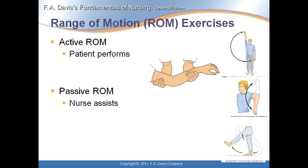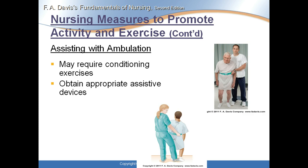Range of motion exercises — active ROM means the patient lifts their arm and performs a full range of motion themselves, while passive ROM means you assist them. Assisting with ambulation may require conditioning exercises first. The longer the patient stays in bed the weaker they get, so get physical therapy working with them as soon as possible. PT will come daily to assess what the patient can do, walk them down the hallway, and determine if they need a walker, wheelchair, or cane. Assessment findings determine discharge destination — home, skilled nursing facility, or rehab.